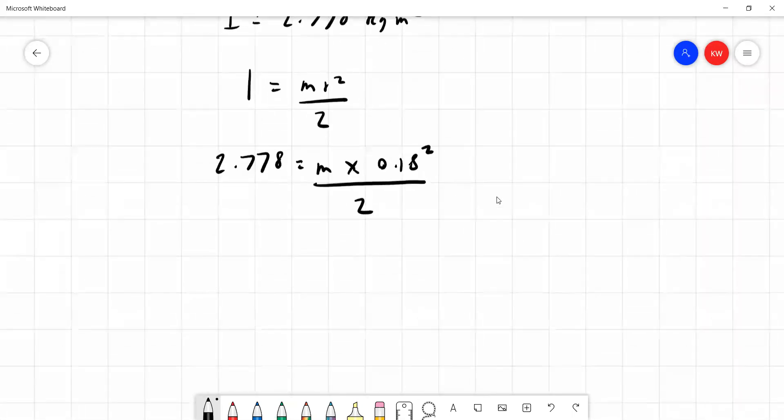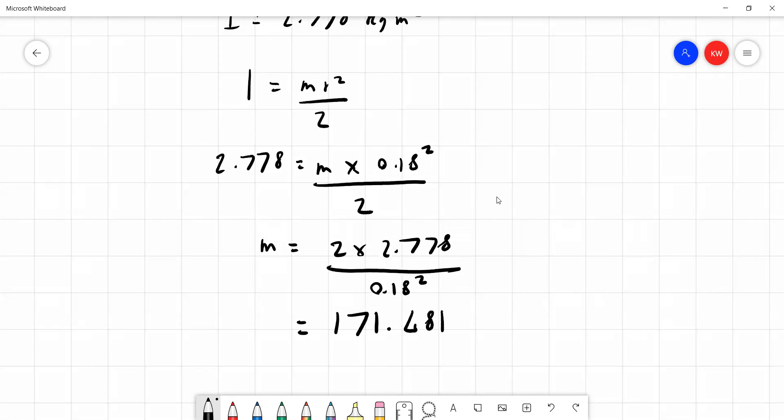So we can rearrange this to get m is equal to 2 times 2.778, we multiply both sides by 2, and then we divide both sides by 0.18 squared to make m by itself. Putting all of this into our calculator we come out with the value of 171.481 kilograms, that's the answer to our question.